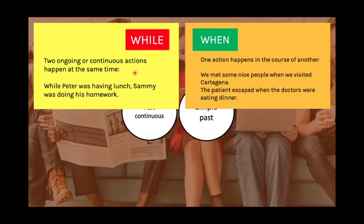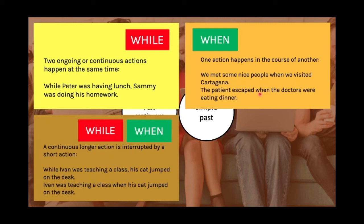That means I went to Cartagena, we met some nice people, and then I came back. 'The patients came when the doctors were eating dinner' — the doctors started having dinner, then the patients arrived, and then the doctors stopped. One action happens in the course of another action. We can connect two actions — one in the simple past and one in the past continuous — using 'while' and 'when,' for example when a continuous longer action is interrupted by a short action. 'While Ivan was teaching a class, his cat jumped on the desk' — Ivan started teaching, then the cat jumped on the desk. One longer action is interrupted by a short action.